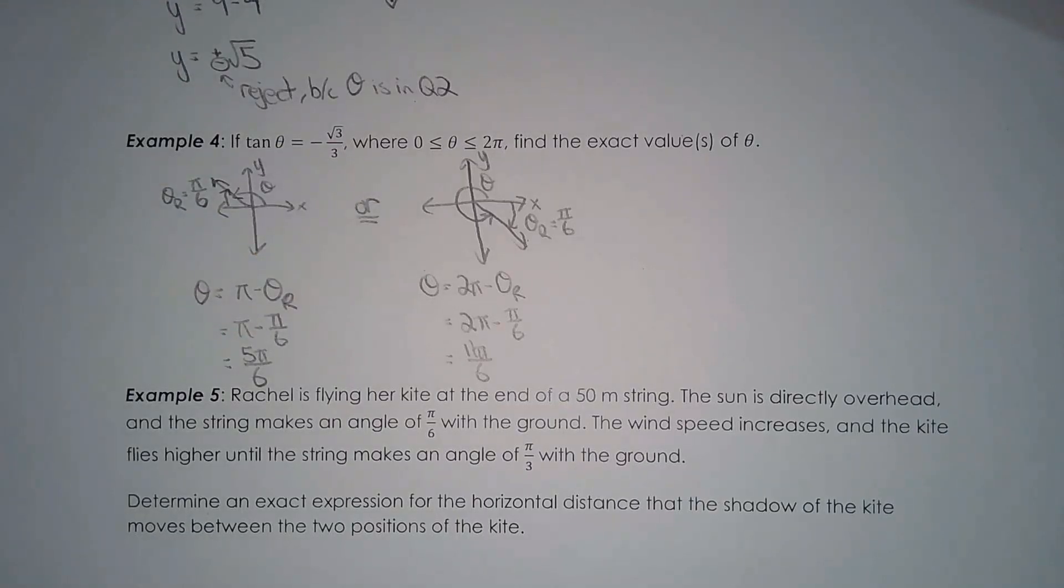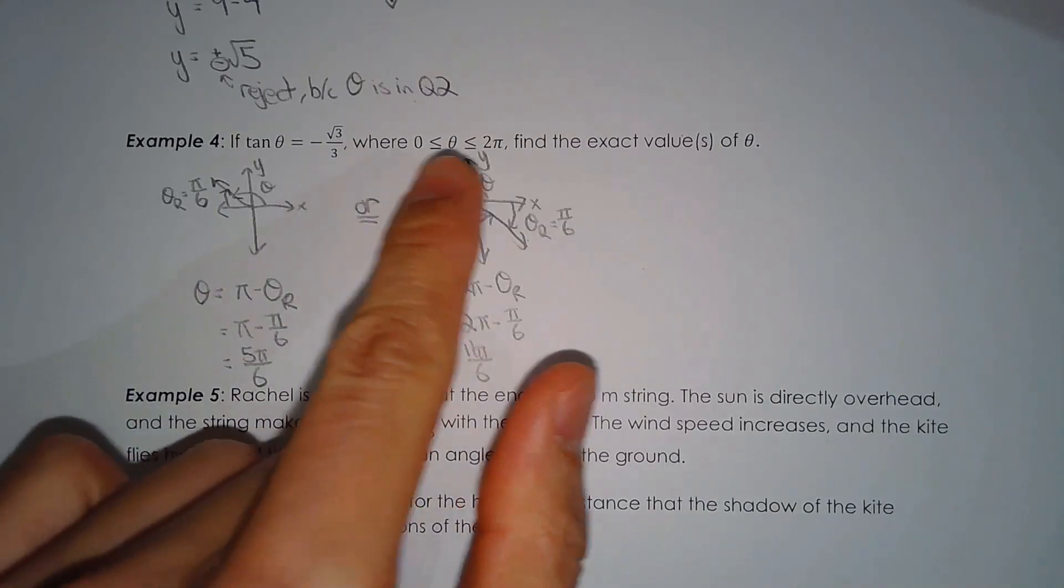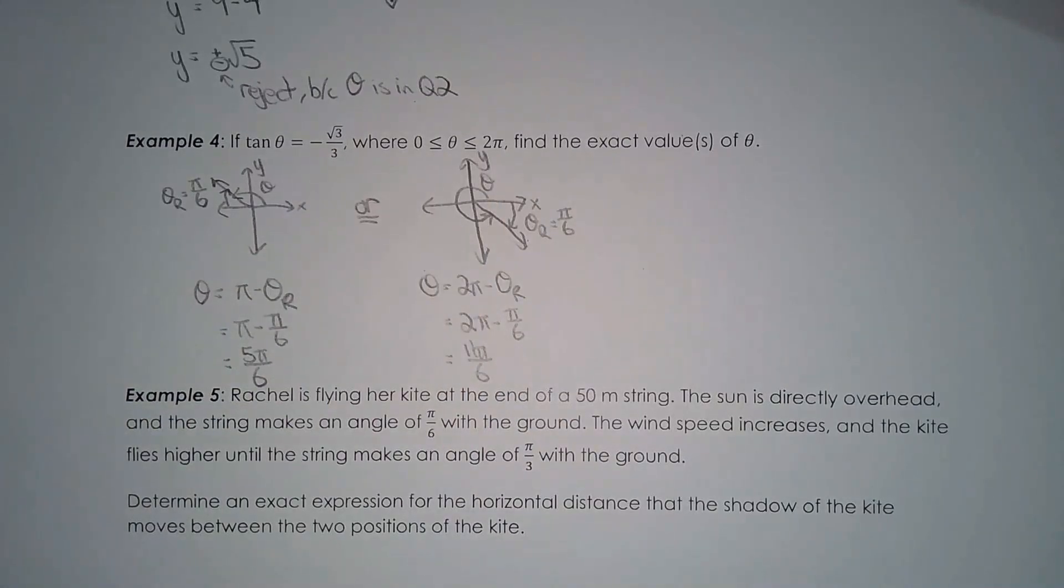Now, I do want to mention that there are actually an infinite number of answers for theta. But unfortunately, we have to reject quite a few of them because of this restriction 0 to 2 pi. Now, if that restriction on theta was not there, how do you find the infinite solutions? Where are all these other answers coming from? So, let's take a look at 5 pi over 6, for example. How do I get the other answers? How do I generate a ratio of negative root 3 over 3? Well, if you think about it, all I have to do is maintain the terminal arm in the exact same location.